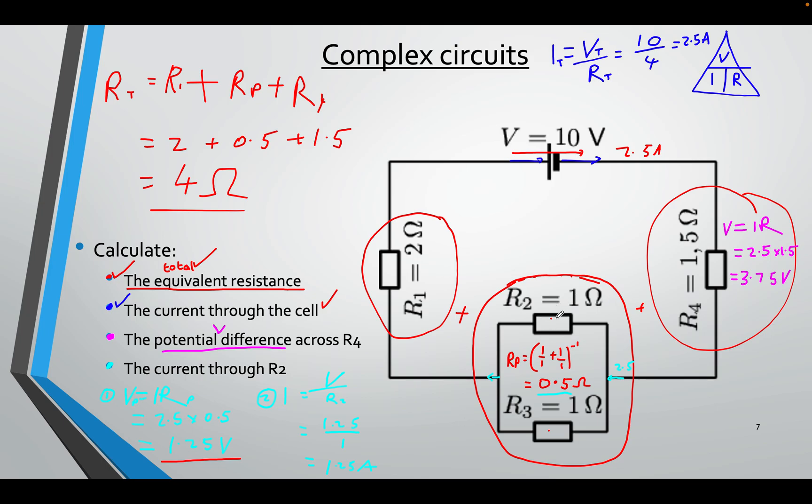Now that I know the voltage, I can find the current in each one. I can do R2, this one over here, to find the current through R2. I'll do V, which we just found, 1.25, divided by R, which is 1. 1.25 divided by 1, which is 1.25 again.